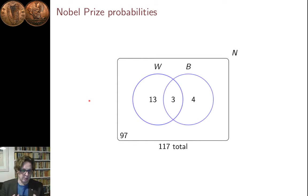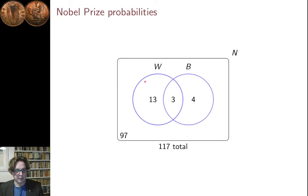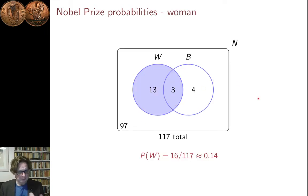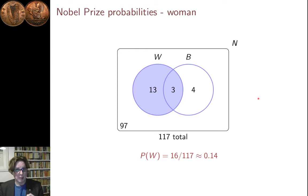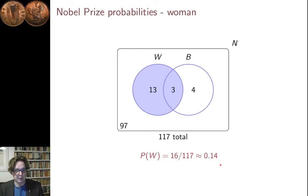Looking back to what we learned about probabilities, we're dealing with events here. This is the event of being a woman; this is the event of being a Booker Prize winner. If you ask what's the probability that a Nobel Prize for Literature winner chosen at random will be a woman, well, that's the probability that you will end up with an element in that set. The set contains 16, you're choosing one at random, and so the probability is 16 over 117, which is 0.14.